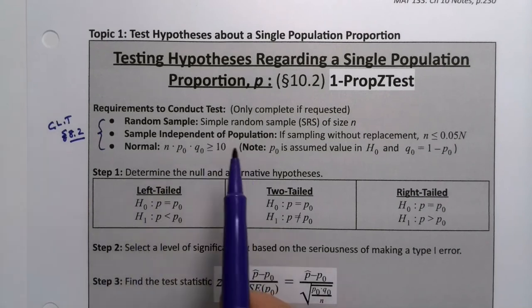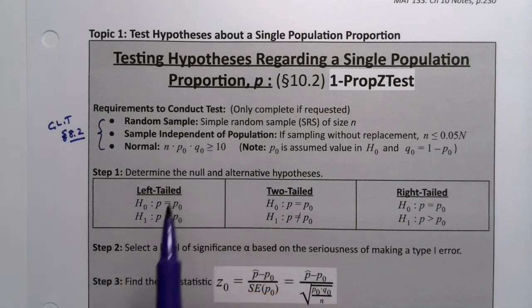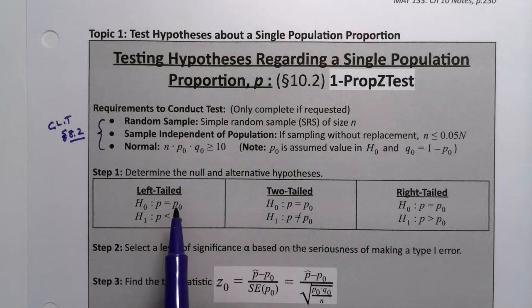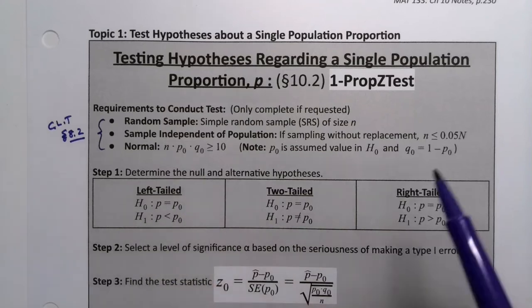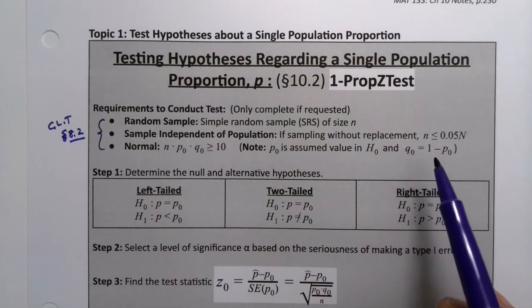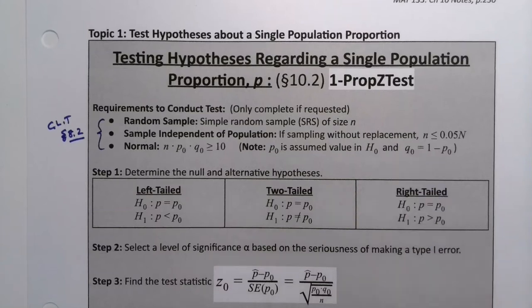But then you need N times P times Q to be greater than 10. In this section, we will use P0 and Q0, which are the null values right here. So zero goes with the zero hypothesis, right? So P0 is the assumed parameter proportion or population proportion, which is a parameter from the null hypothesis. And Q0 is just its complement, right? Because P and Q are still the probability of success and probability of failure.